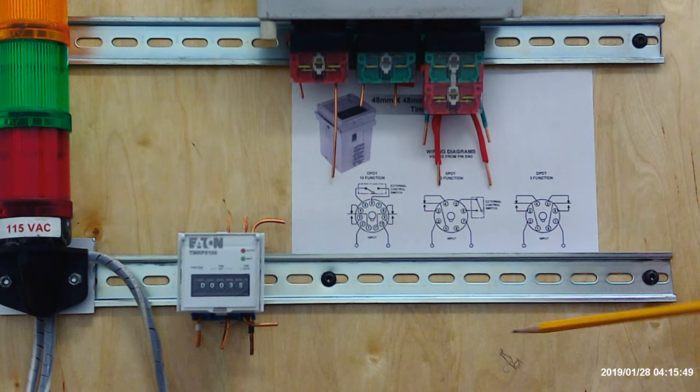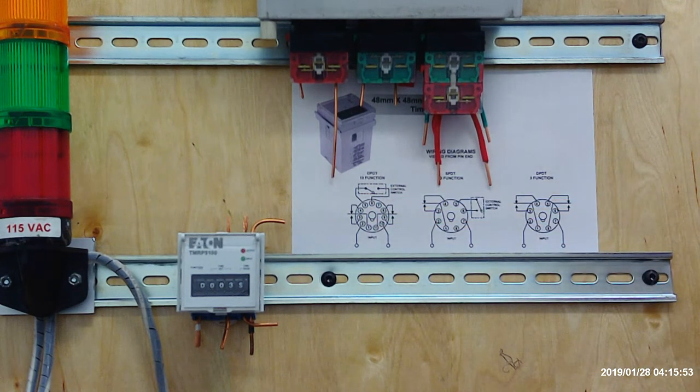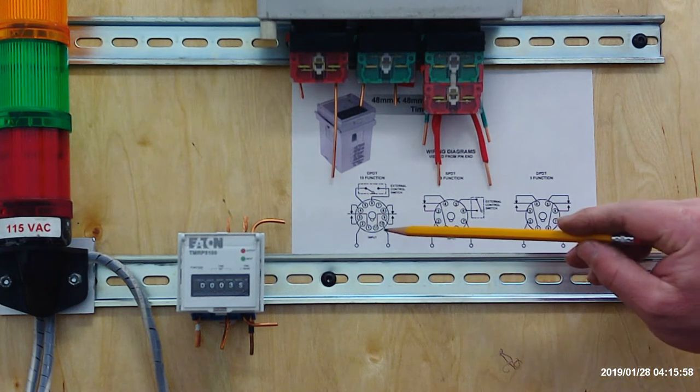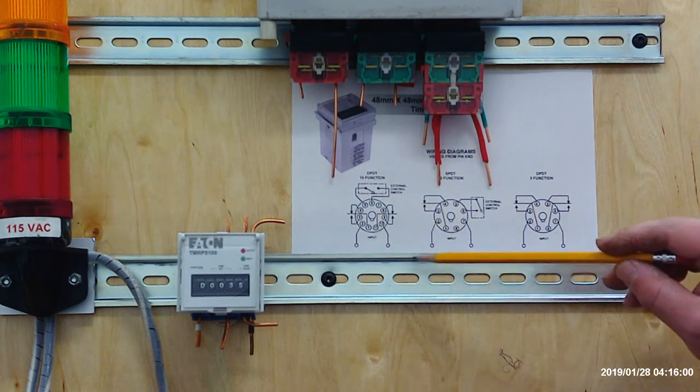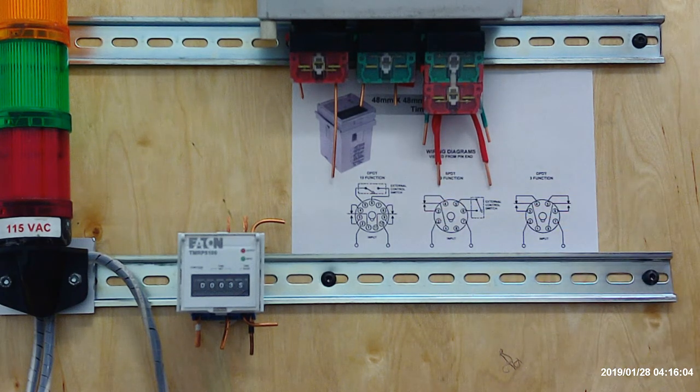You look over to the left, you see the 1 is normally closed with 4 and normally open with 3. Same thing with contact point 11 is closed with 8 and open with 9.